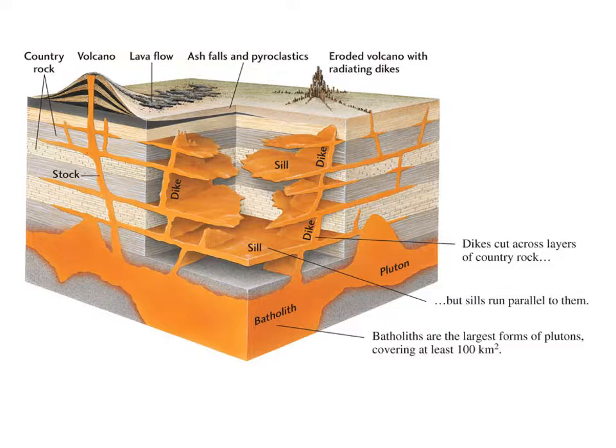Let's start at the bottom. A general term for any piece of magma that intrudes into the crust and then cools into rock is called a pluton. Pluto is the god of the underworld in Roman mythology, so plutonic rocks are rocks that cool underground. Anything that forms from molten magma underground is called a pluton.